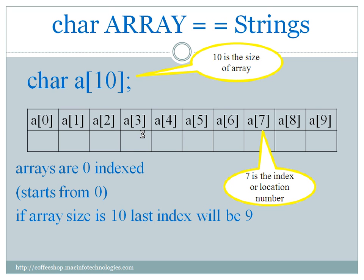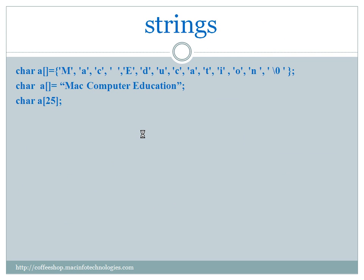We will see some declaration and initialization. To declare an array we use the keyword char and the variable name — any valid variable name, which we already discussed in the previous videos. We can initialize it on the same line using curly braces, with inverted commas for every character and every character separated by a comma — for example: 'm', 'a', 'c', and a space character.